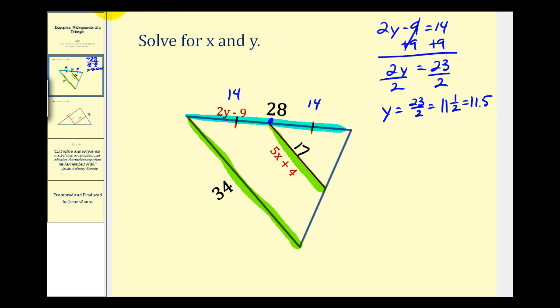And now we have enough information to determine the value of x. Five x plus four must equal seventeen. So we'll subtract four on both sides. This will give us five x, this is zero. Seventeen minus four is thirteen, divide both sides by five.